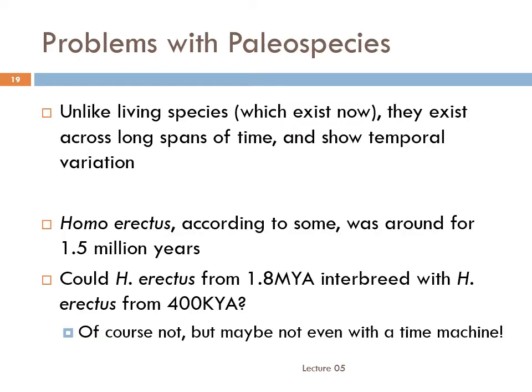Paleospecies also present an entirely different problem from living biological species. Because they're theoretical constructs and because the fossil record is usually so spotty, they often cover very long time spans. Because microevolution is constant and is the basis of macroevolution, species that cover extremely long time spans — like paleospecies — may have considerable variation from the oldest to the youngest. For example, the longest-lived human ancestor was Homo erectus, who by some accounts was present on the earth for about 1.5 million years. Could an early Homo erectus, around 1.8 million years ago, interbreed with one of the latest Homo erectus, around 400,000 years ago? They were biologically similar, but certainly much more different from one another than any two living human beings are today. So based on that observation, we might conclude that those two specimens were unable to interbreed, and therefore they should be called by different species names.